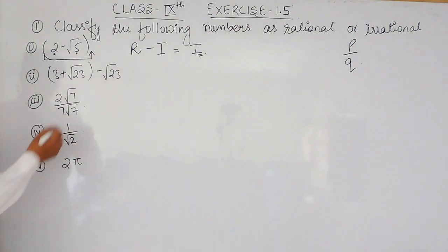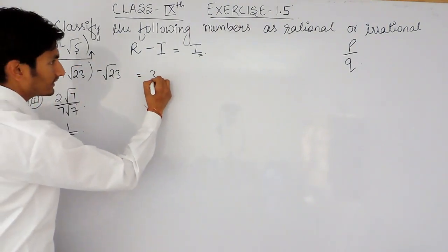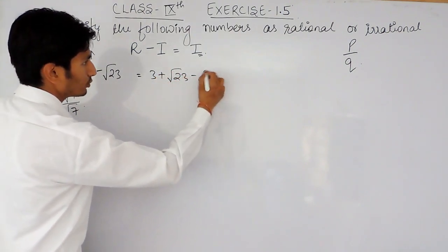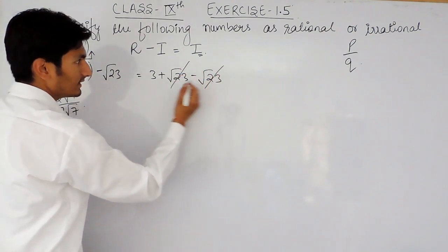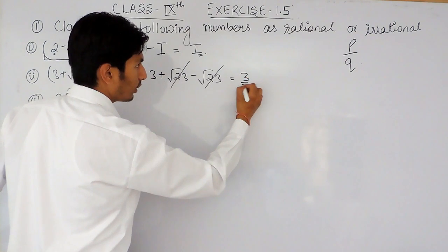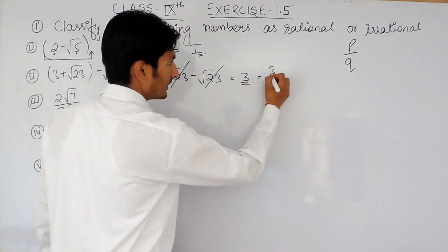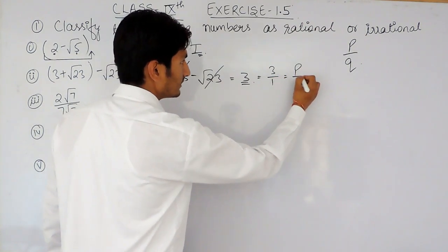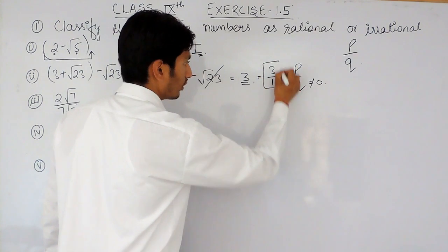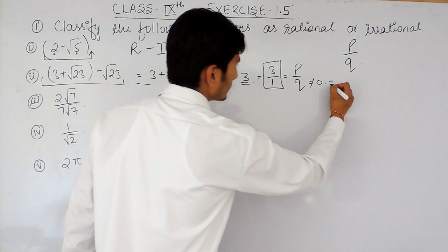Now for the second part, first I open the bracket. This is (3 + √23) minus √23. The √23 terms cancel each other, and the result is 3. Now 3 is a rational number because it can be written as 3 upon 1, which is in the form of p upon q where q is not equal to 0. So this complete expression is rational.